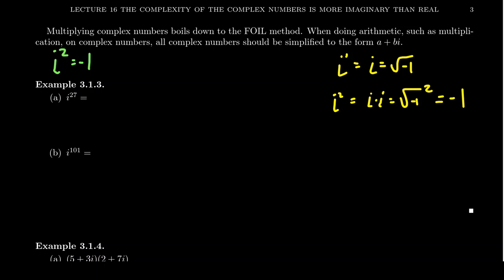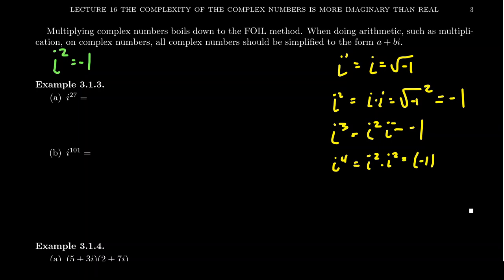What if you had to take higher powers? If you had to take i cubed, for example — i cubed means you're going to take i squared times i, which equals negative one times i, which is negative i. And if you take i to the fourth, that would be i squared times i squared, which is negative one squared, which is just one.